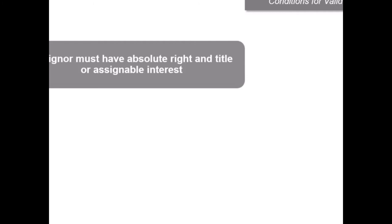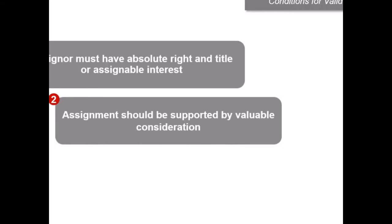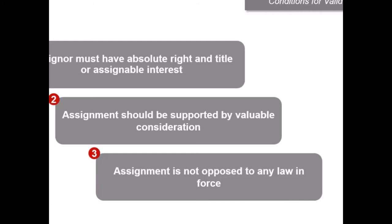Let us now look at the conditions necessary for a valid assignment. First, the person executing it, the assigner, must have the absolute right and title or assignable interest to the policy being assigned. Secondly, it is necessary that the assignment be supported by valuable consideration, which may include love and affection. Thirdly, the assignment must not be opposed by any law in force — for example, assignment of a policy to a foreign national residing in another country may contravene exchange control regulations. And finally, the assignee can do another assignment but cannot do nomination because the assignee is not life assured.